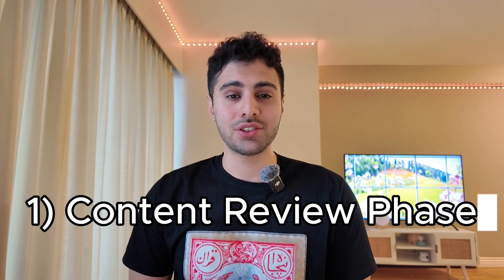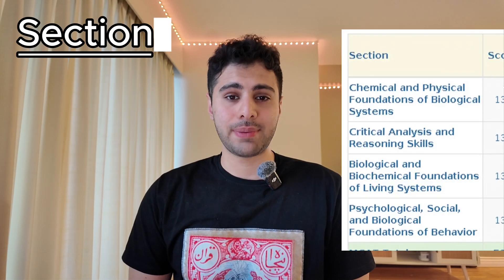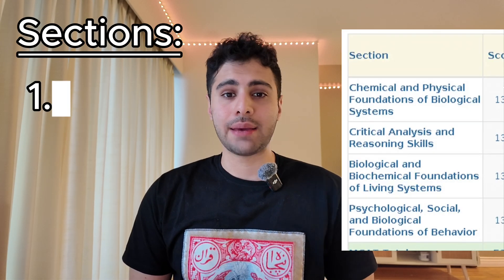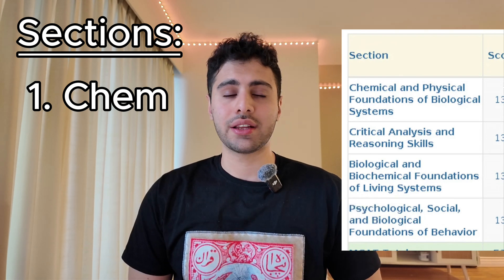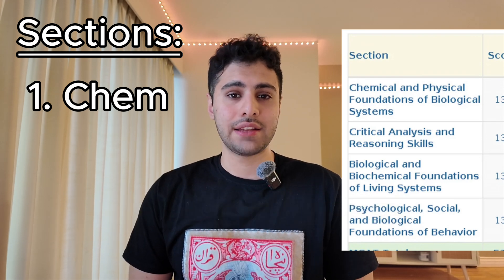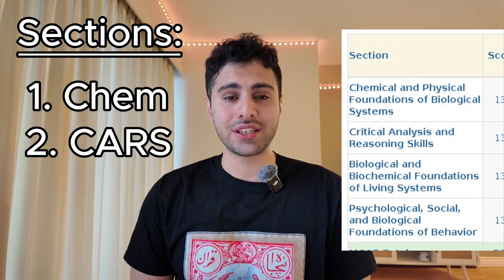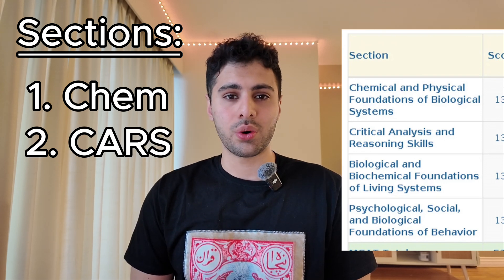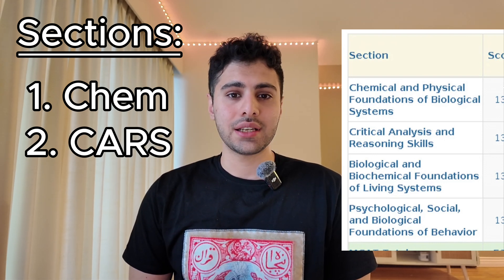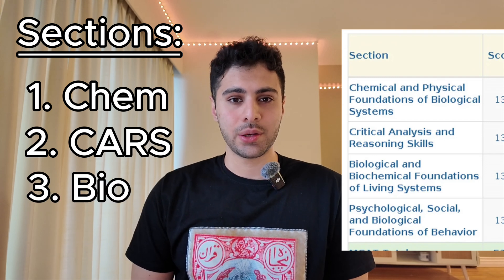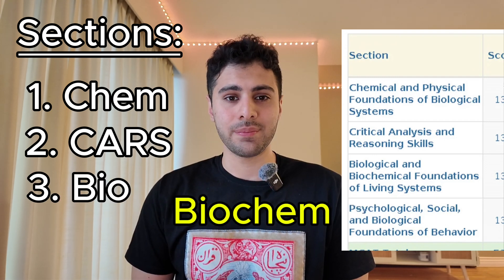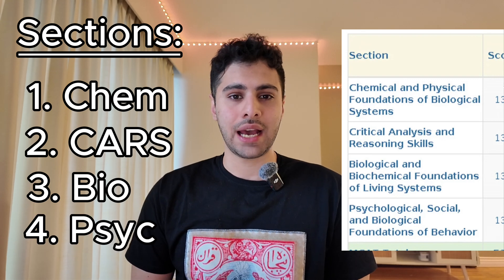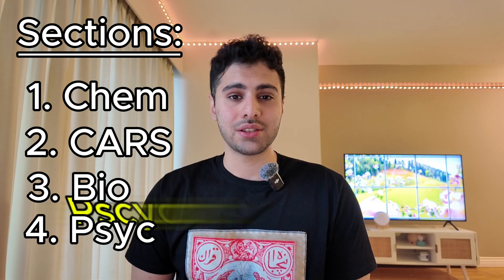Phase one: content review. The MCAT exam has four sections: chemistry, which includes organic chemistry, general chemistry, and physics; then critical analysis and reasoning skills, or CARS; the third section is bio, which includes biology and biochemistry; and the last section is psych-soc, covering psychology and sociology.